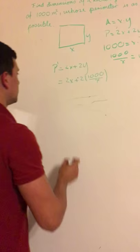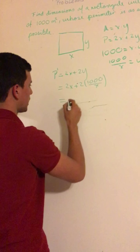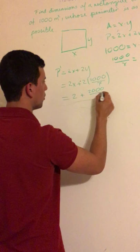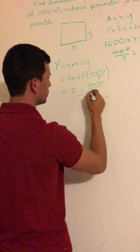Once you take the derivative, the differentiation of 2x is 2. Here is negative, using the quotient rule. So it is negative 2000 over x squared.